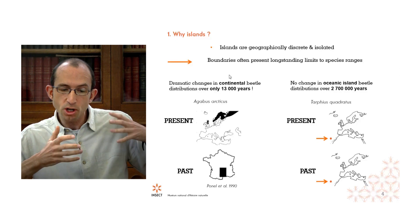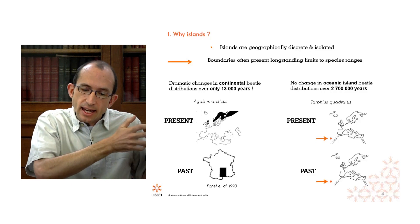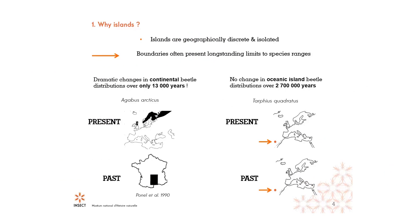Because of this, their coastlines often present long-standing limits to the distributions of species and populations. A good example is the beetle Agabus arcticus, which today is only found in extreme northern Europe and the Arctic region. But we know from sediment records that it existed in the Massif Central of France until 13,000 years ago — very recently in evolutionary terms. So we can infer that it's undergone an extremely rapid shift in distribution in a very short period of time.